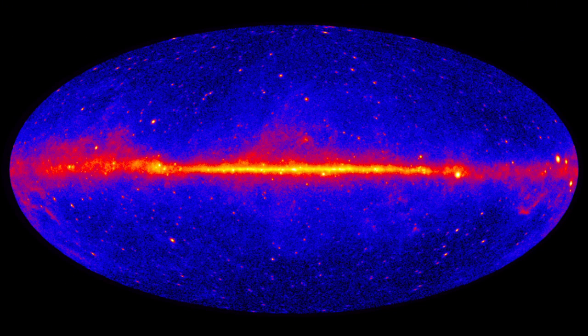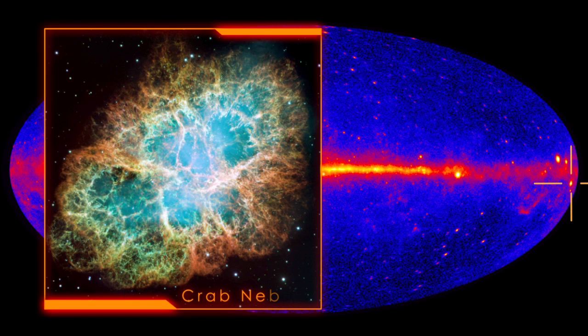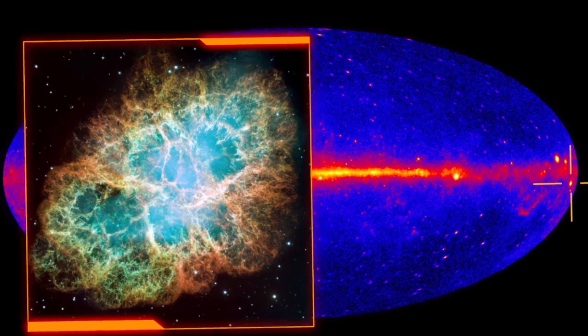Here's what the sky looks like in high-energy gamma rays. The pulsar in the Crab Nebula is among the brightest sources. As the pulsar spins, its powerful magnetic field causes particles to flow. These currents ultimately light up the nebula.